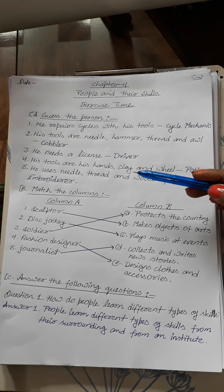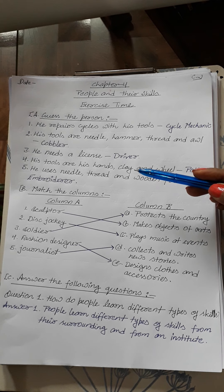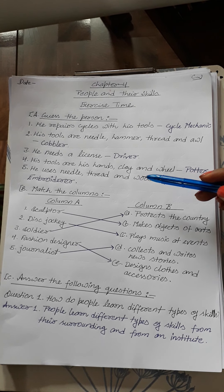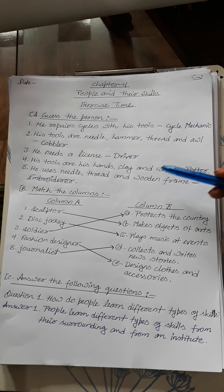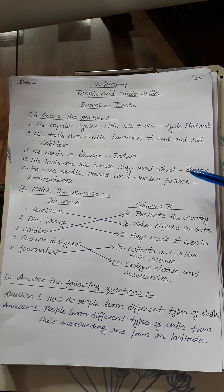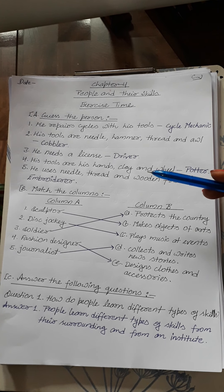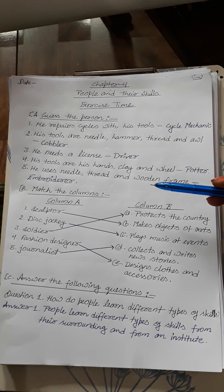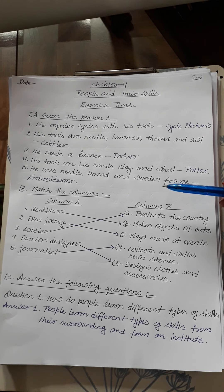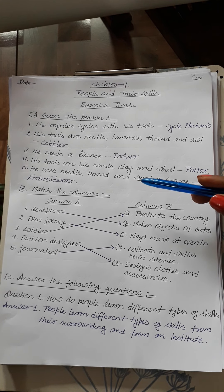Number 4: His tools are his hands, clay and wheel. So he is a potter. Number 5: He uses needle, thread and wooden frame. So he is an embroiderer.